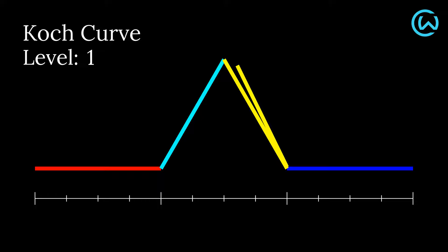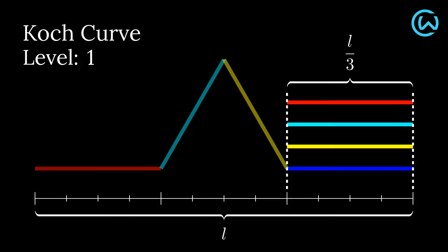At level one, the Koch curve has four equal line segments, each measuring one-third of the length of the initial straight line.